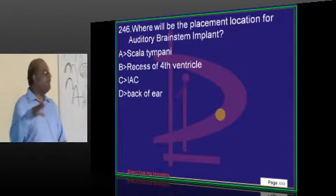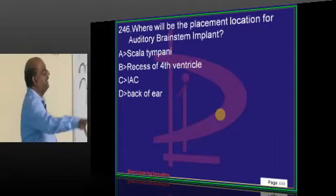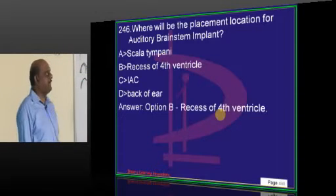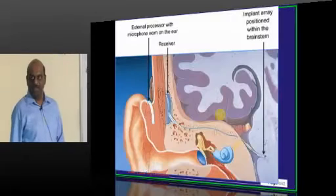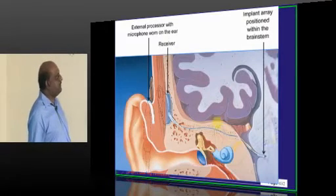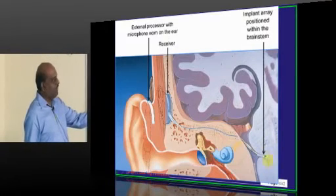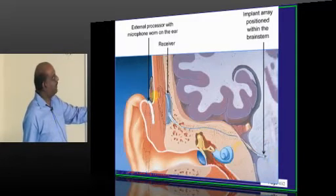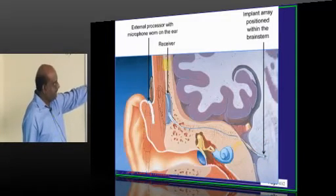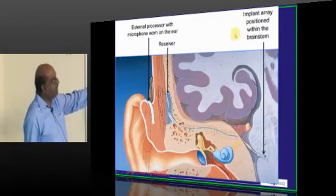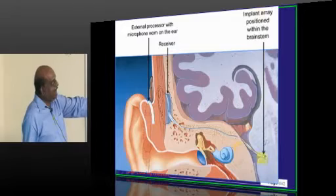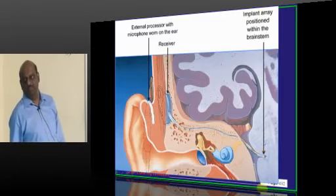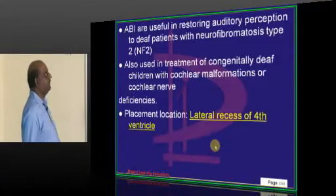Where do you place the auditory brainstem implant? Typically in the recess of the fourth ventricle, where you have one external processor, a receiver, and an implant positioned near the brainstem.